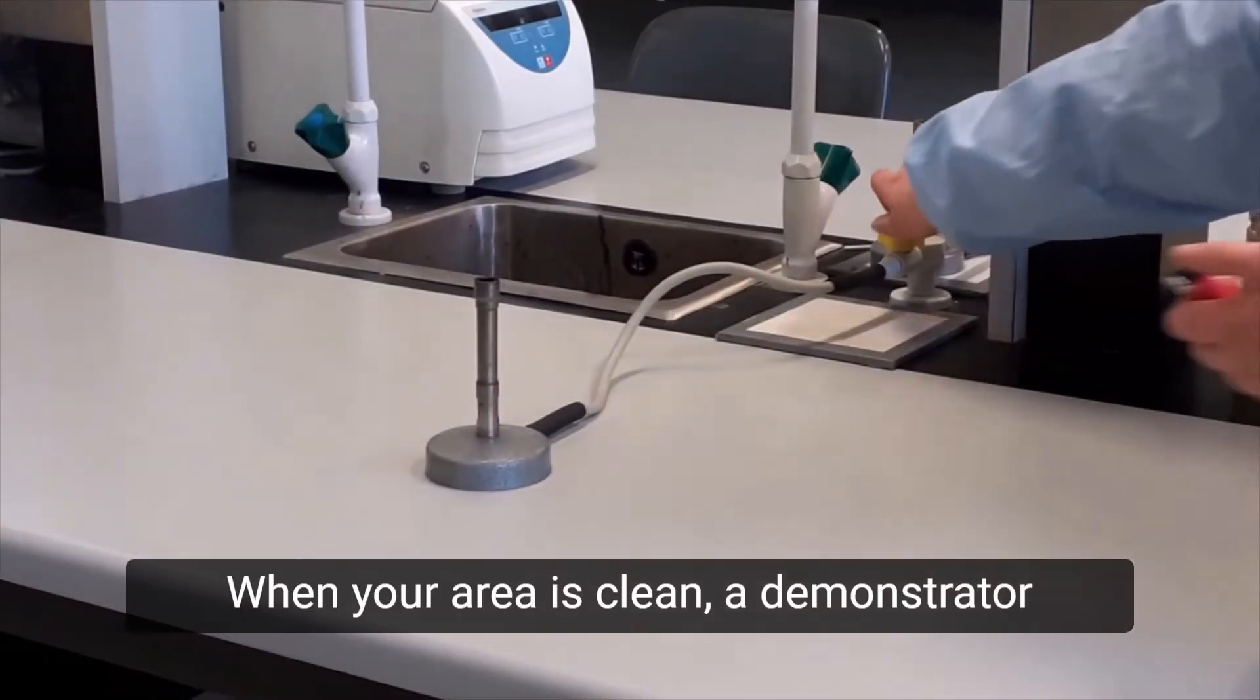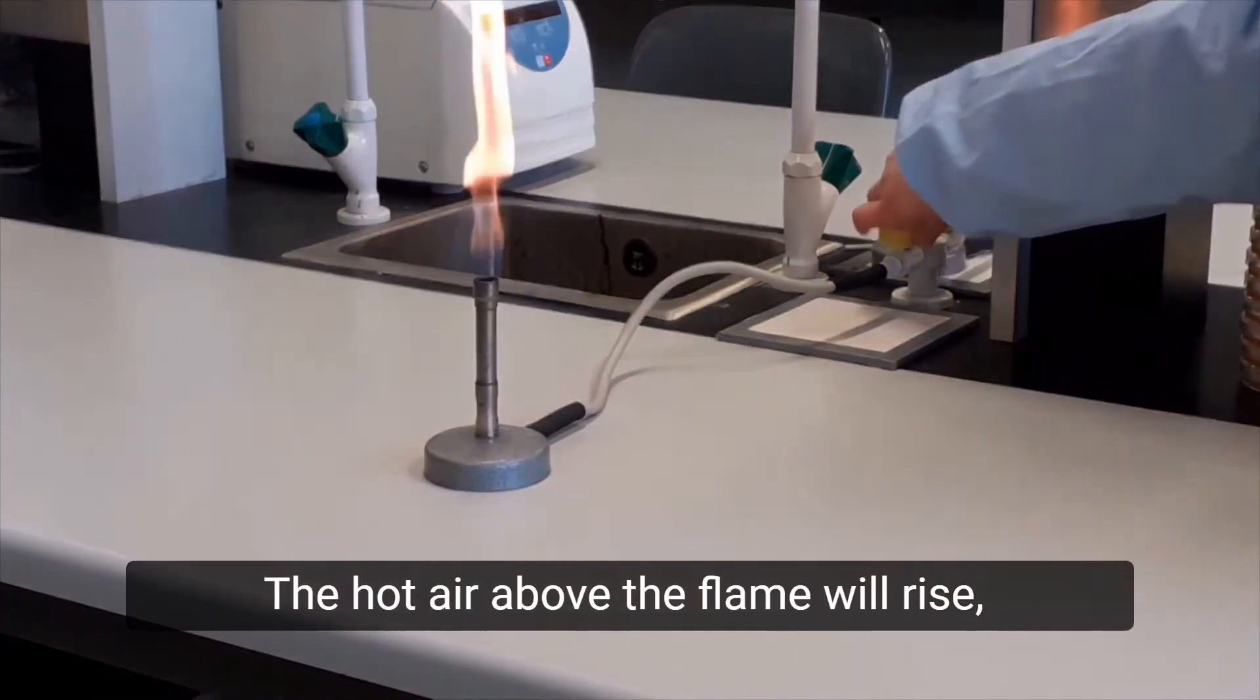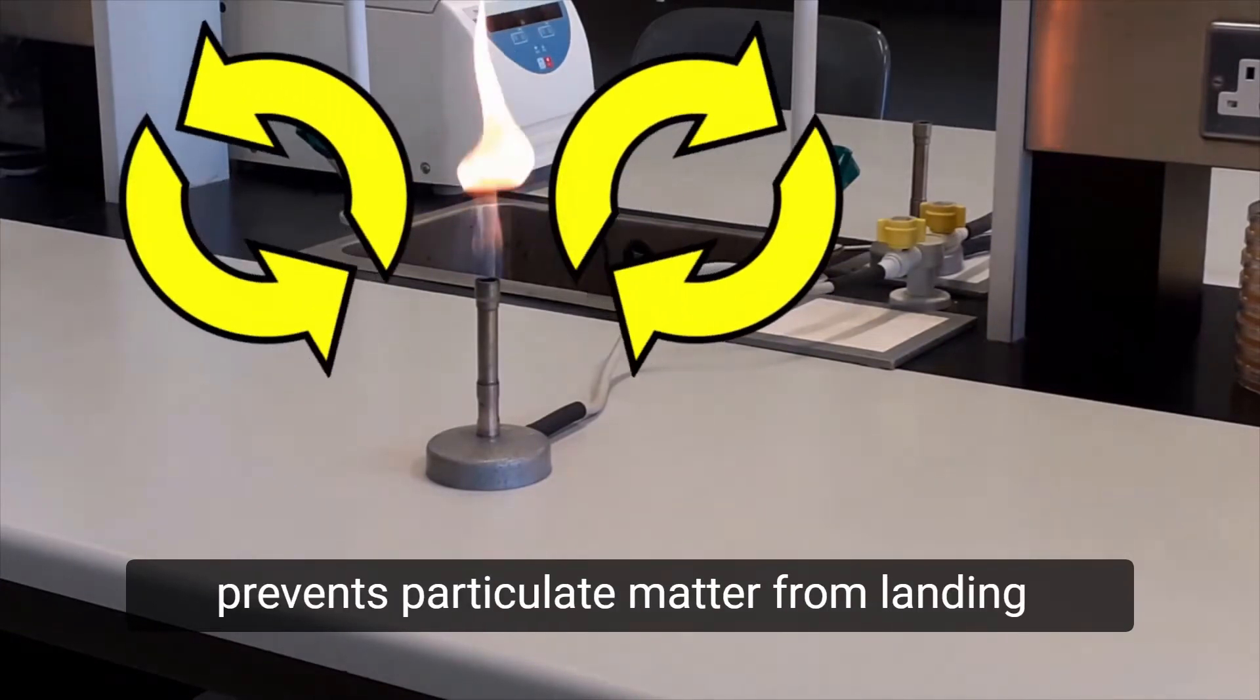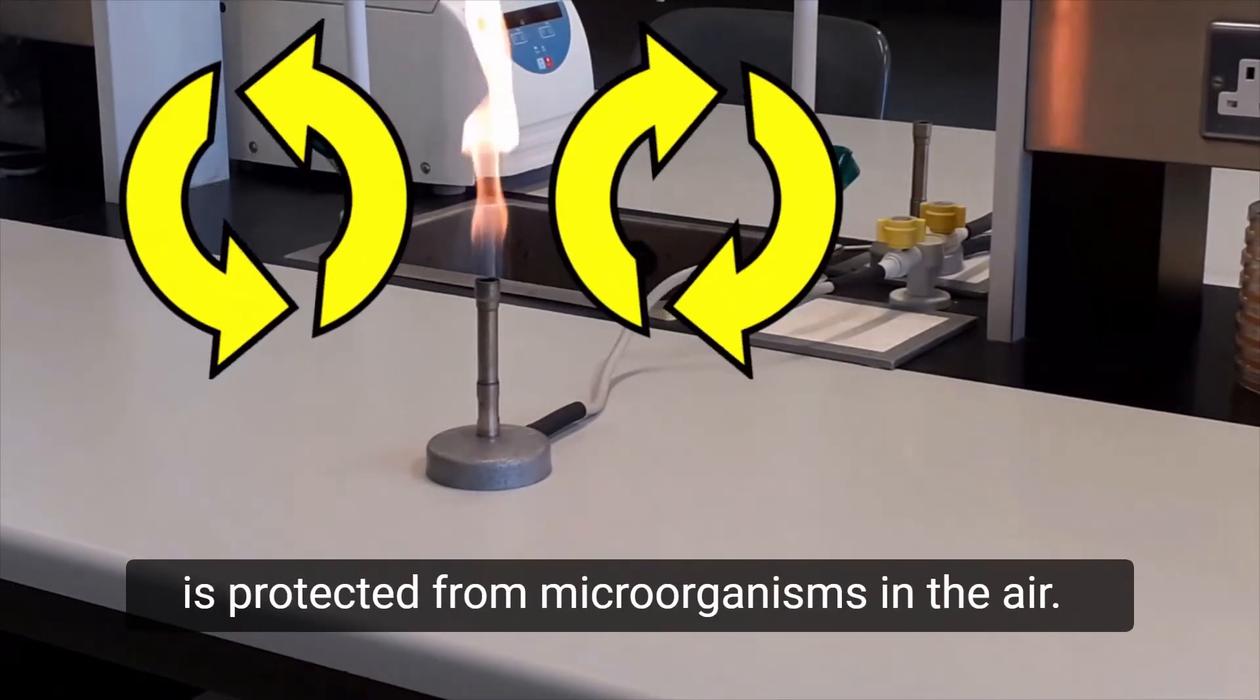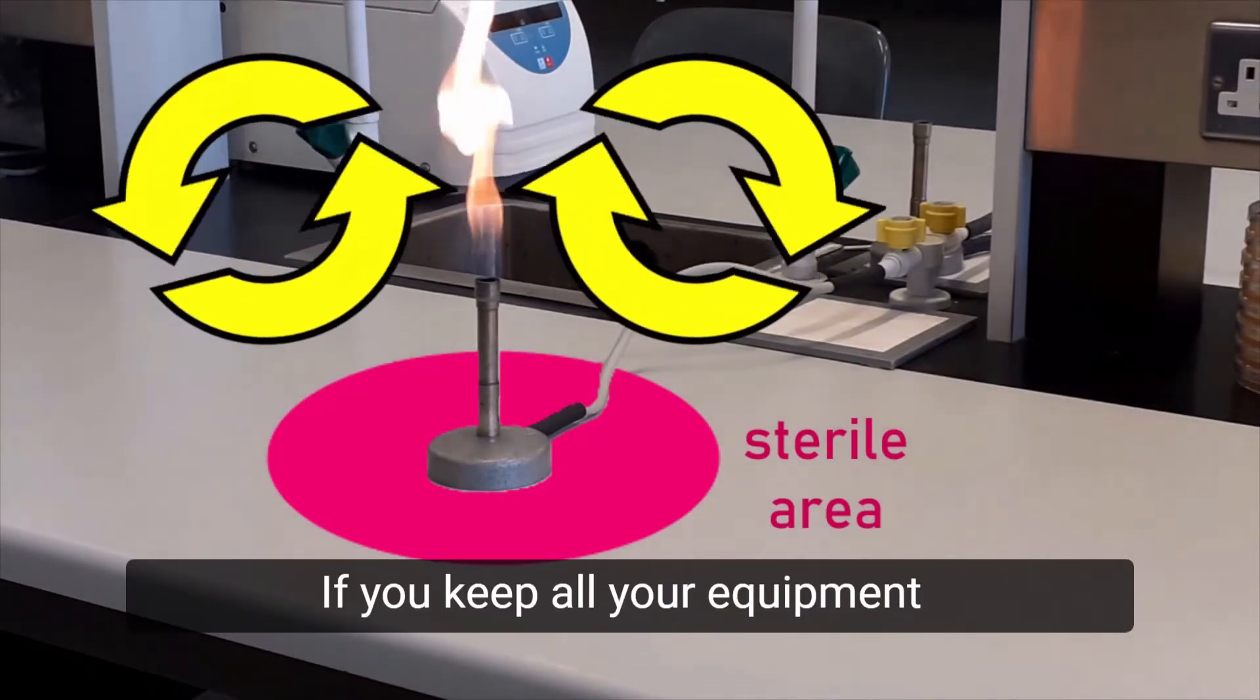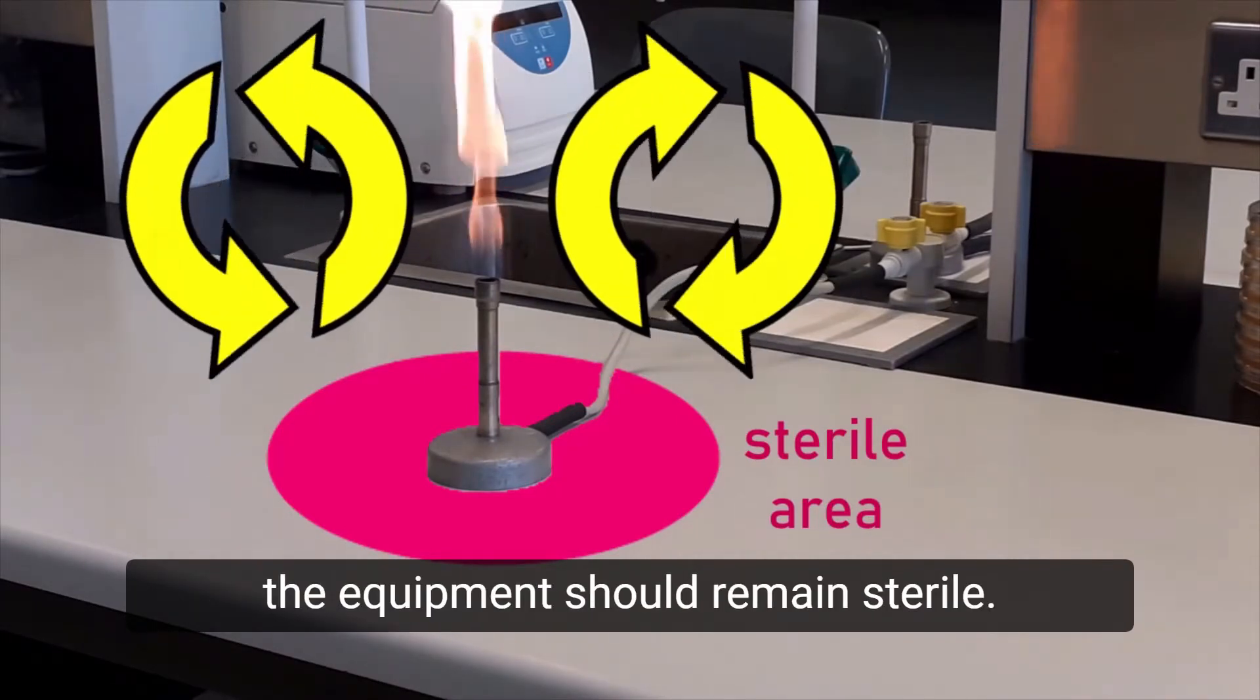When your area is clean, a demonstrator will light your Bunsen burner. The hot air above the flame will rise, creating an updraft that prevents particulate matter from landing next to the Bunsen burner. Therefore, the area immediately around the Bunsen is protected from microorganisms in the air. If you keep all your equipment close to the Bunsen throughout the protocol and you work slowly and carefully, the equipment should remain sterile.